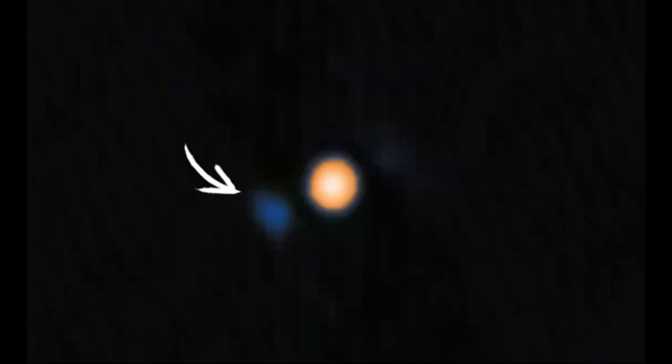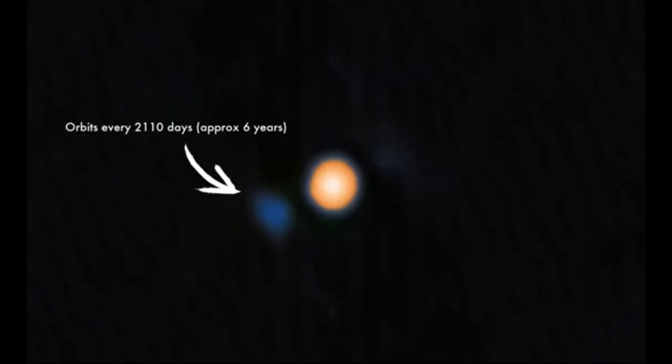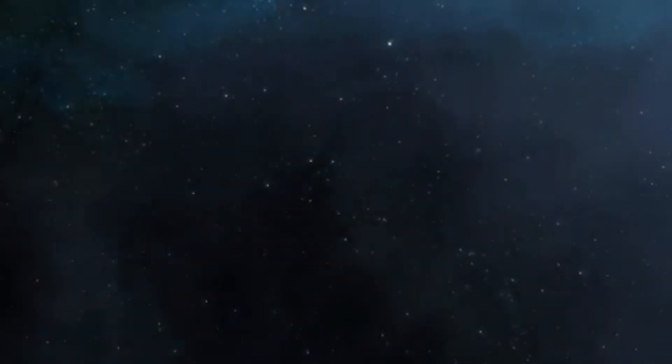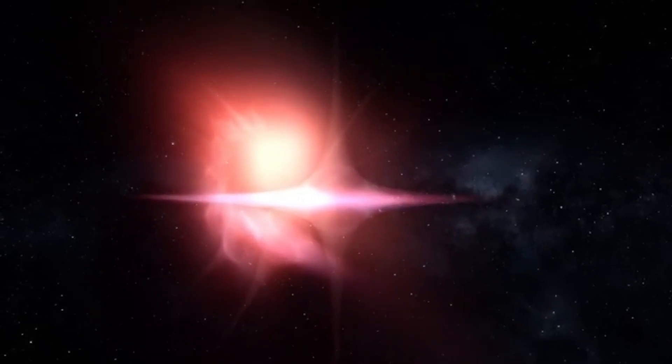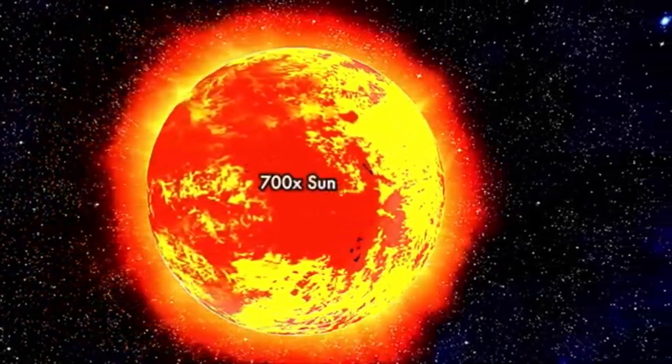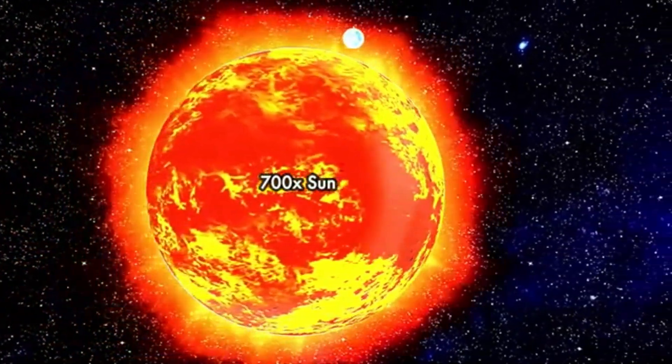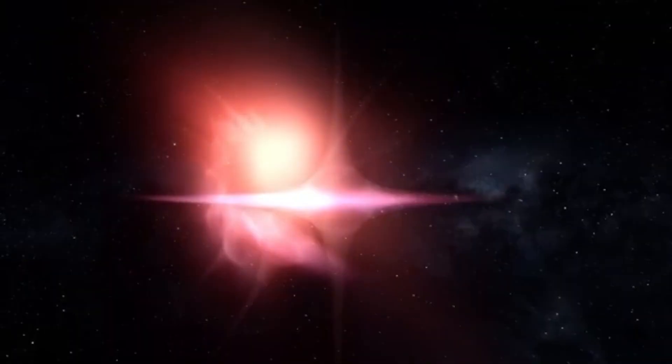Every 80 years, as the white dwarf gathers hydrogen from the red giant, a critical mass builds on its surface. Eventually, this triggers a thermonuclear runaway fusion event, causing a powerful nova explosion. When this occurs, TCB becomes 1,500 times brighter, visible to the naked eye. The last explosion happened in 1946, and now, as we approach another 80-year mark, the world awaits its return.